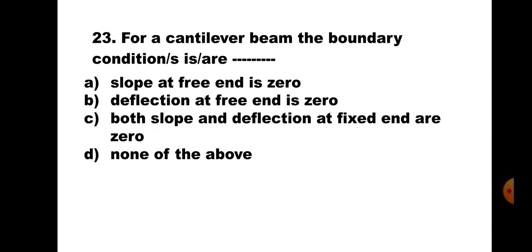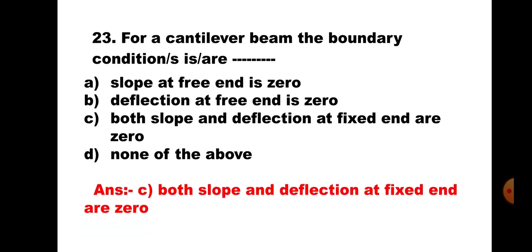Question number 23. For a cantilever beam, the boundary conditions are: A. Slope at free end is 0, B. Deflection at free end is 0, C. Both slope and deflection at fixed end are 0, D. None of the above. When we use the double integration method, constants of integration are calculated using boundary conditions. For a cantilever, at the fixed end slope is 0 and deflection is also 0. Hence, the correct answer is C — both slope and deflection at the fixed end are 0.